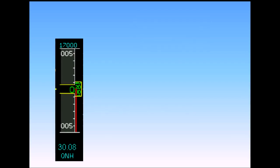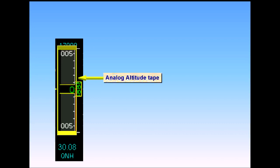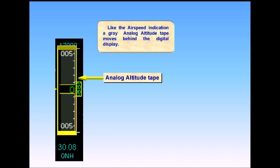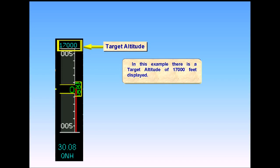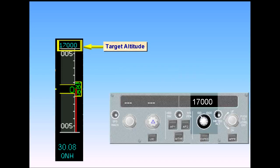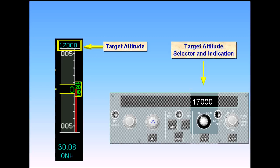Like the airspeed indication, a gray analog altitude tape moves behind the digital display. In this example, there is a target altitude of 17,000 feet displayed. On the flight control unit, FCU, there is an altitude selector which shows the current selected altitude.